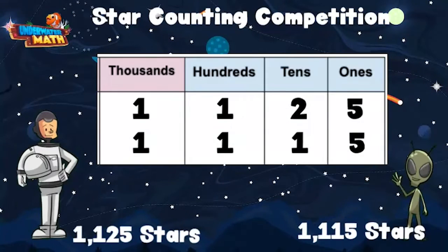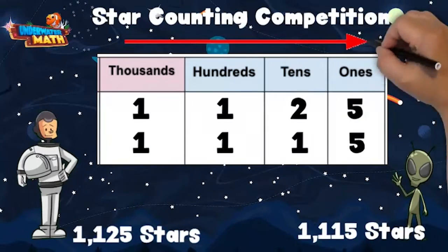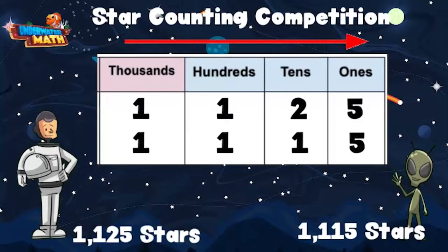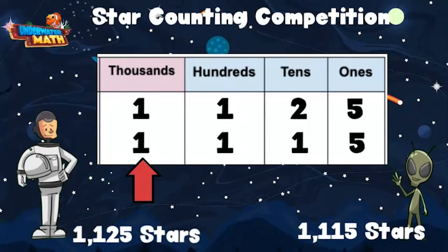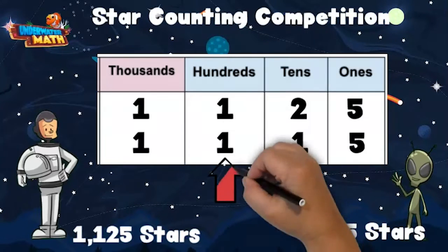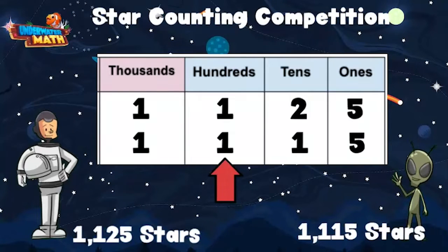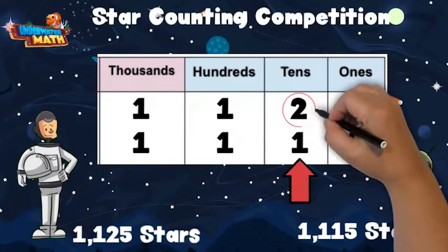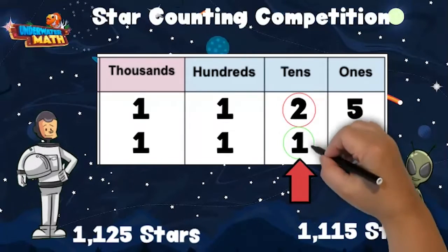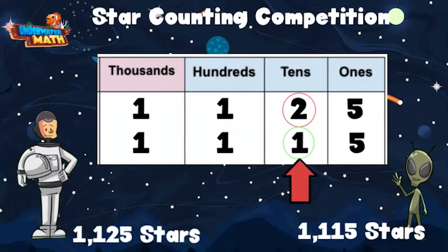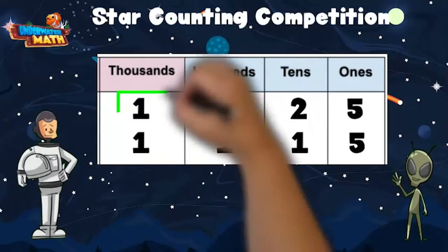When we compare numbers, we want to look at each digit in order from the largest place value on the left to the smallest place value on the right. Both numbers have a one in the thousands place, which means they are the same so far. They also both have a one in the hundreds place — still the same. In the tens place, I have a two and Lenny has a one.